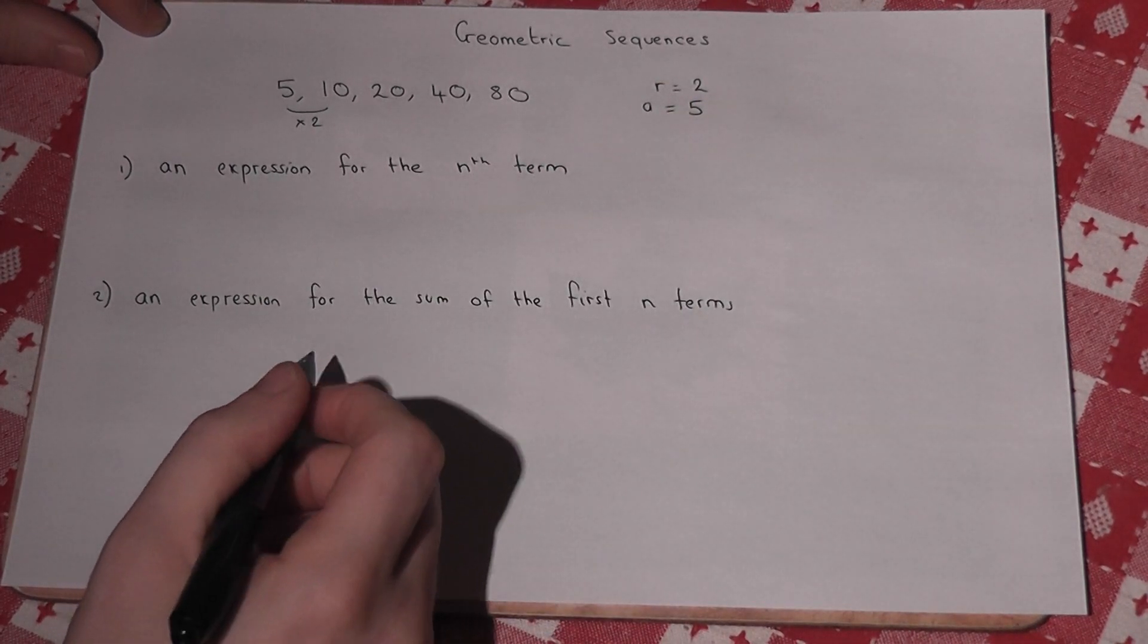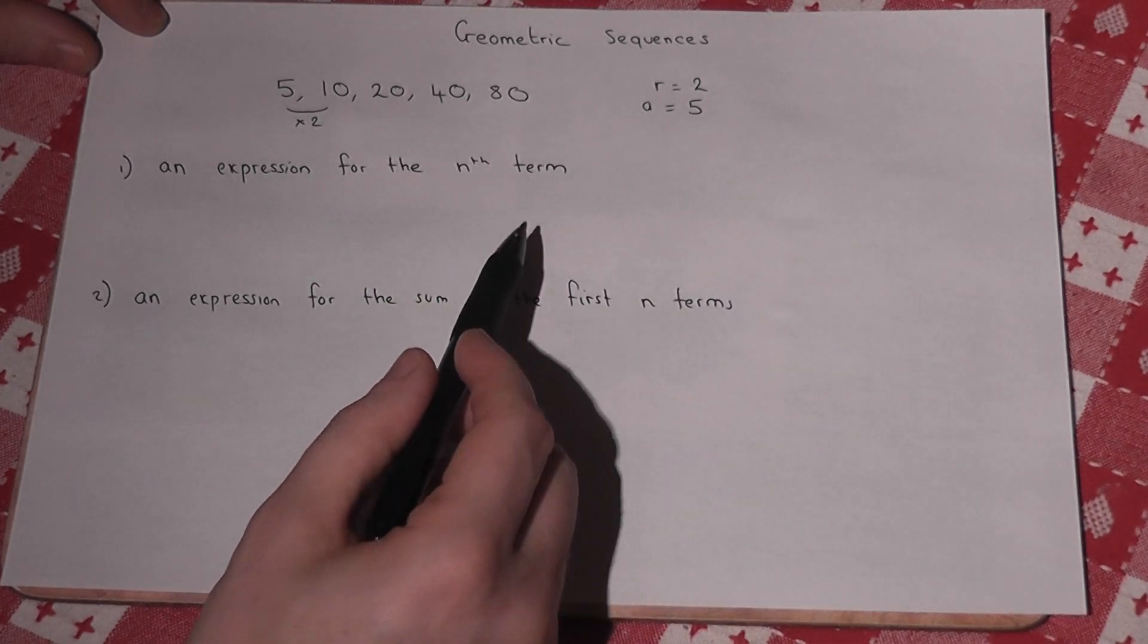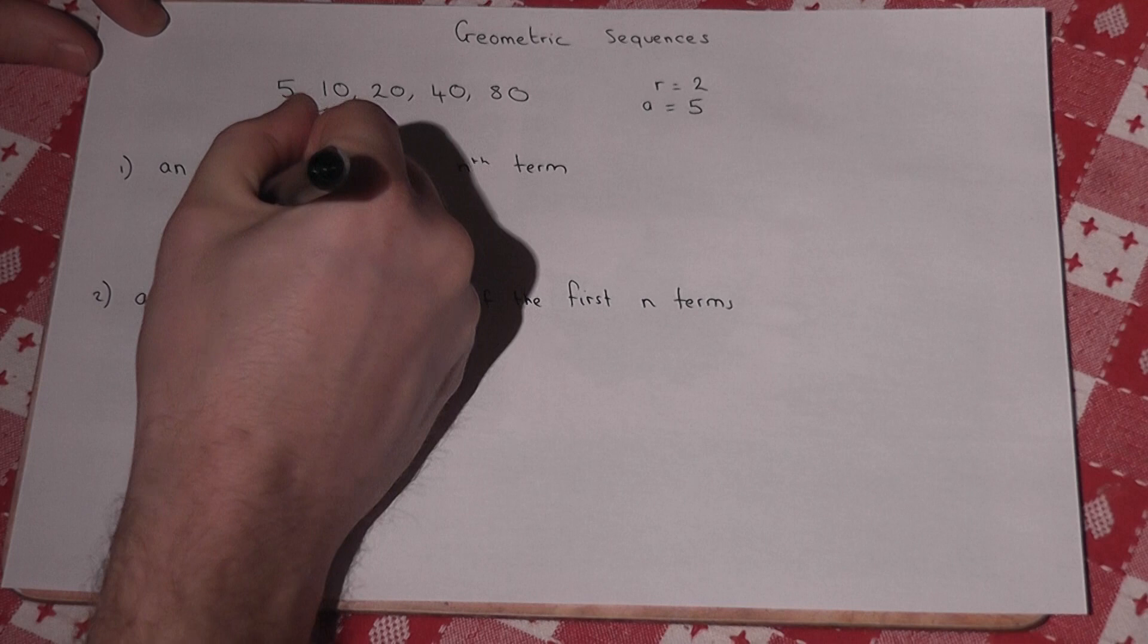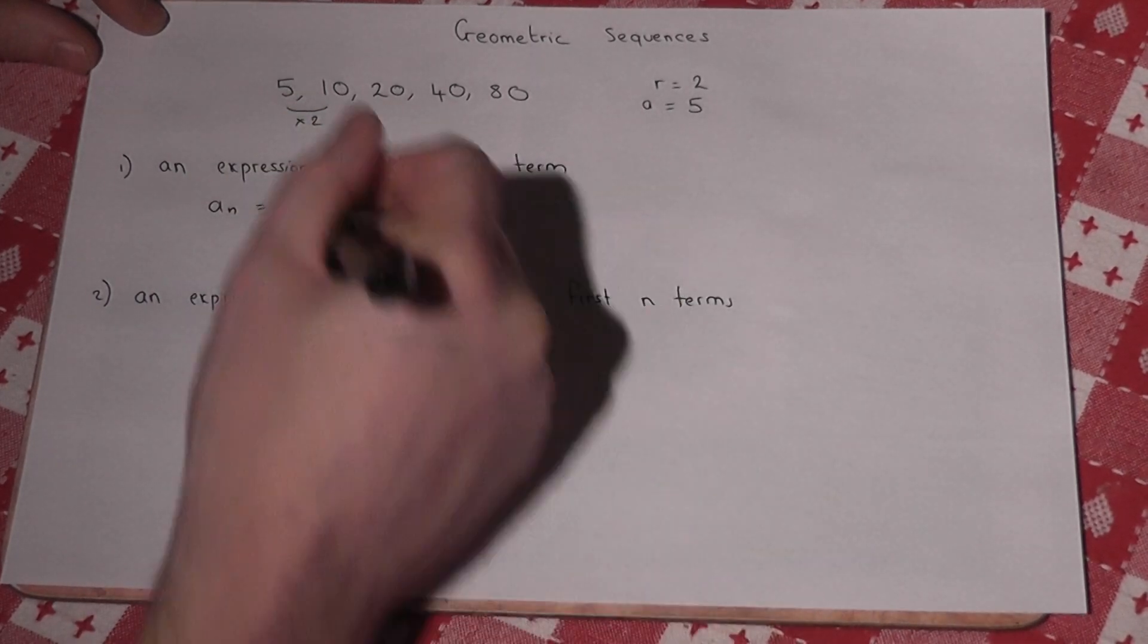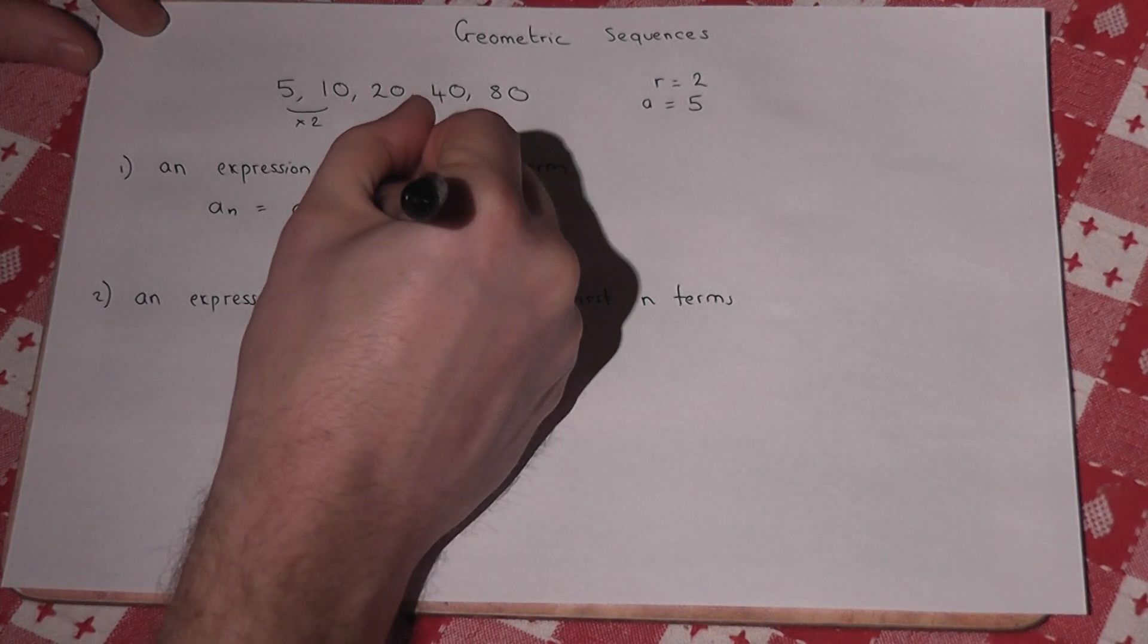And there's a formula for the nth term along in the sequence, and this is aₙ equals a times r to the power of n minus 1.